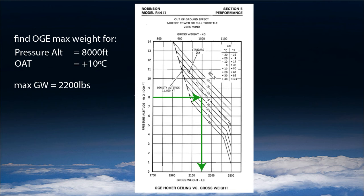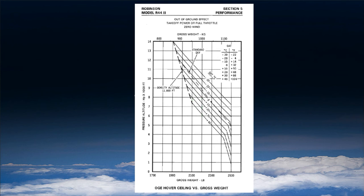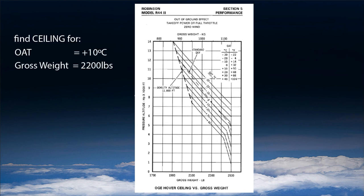Now let's look at how to compute the ceiling. We might think we can use the chart just the other way around. Let's try to find the ceiling for OAT plus 10 and gross weight 2,200 pounds. Can we just go up from 2,200, find the plus 10 degree line, then go left to find 8,000? That would be the wrong answer.